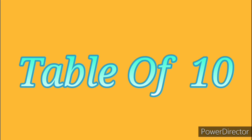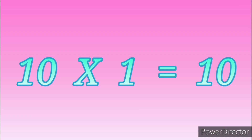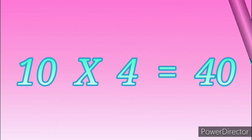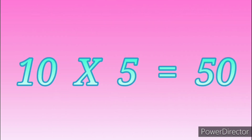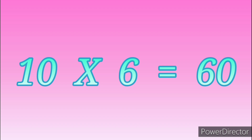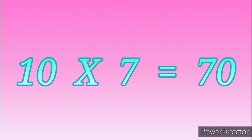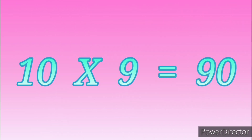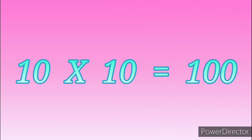Table of Ten: 10 ones are 10, 10 twos are 20, 10 threes are 30, 10 fours are 40, 10 fives are 50, 10 sixes are 60, 10 sevens are 70, 10 eights are 80, 10 nines are 90, 10 tens are 100.